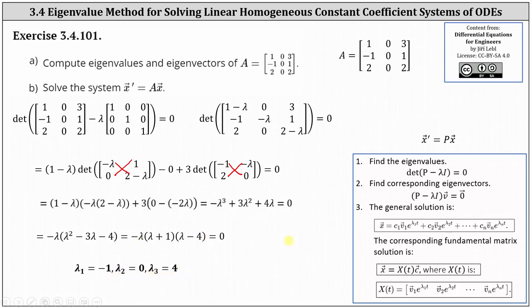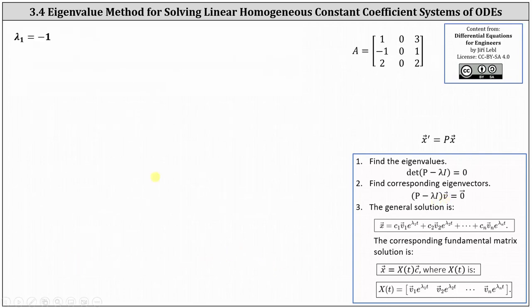Now we want to determine corresponding eigenvectors for each eigenvalue. For each eigenvalue, we set up the equation: the difference of matrix A and lambda I times vector V equals the zero vector, and then determine vector V, which will give us the corresponding eigenvector. Let's begin with lambda sub one equals negative one.